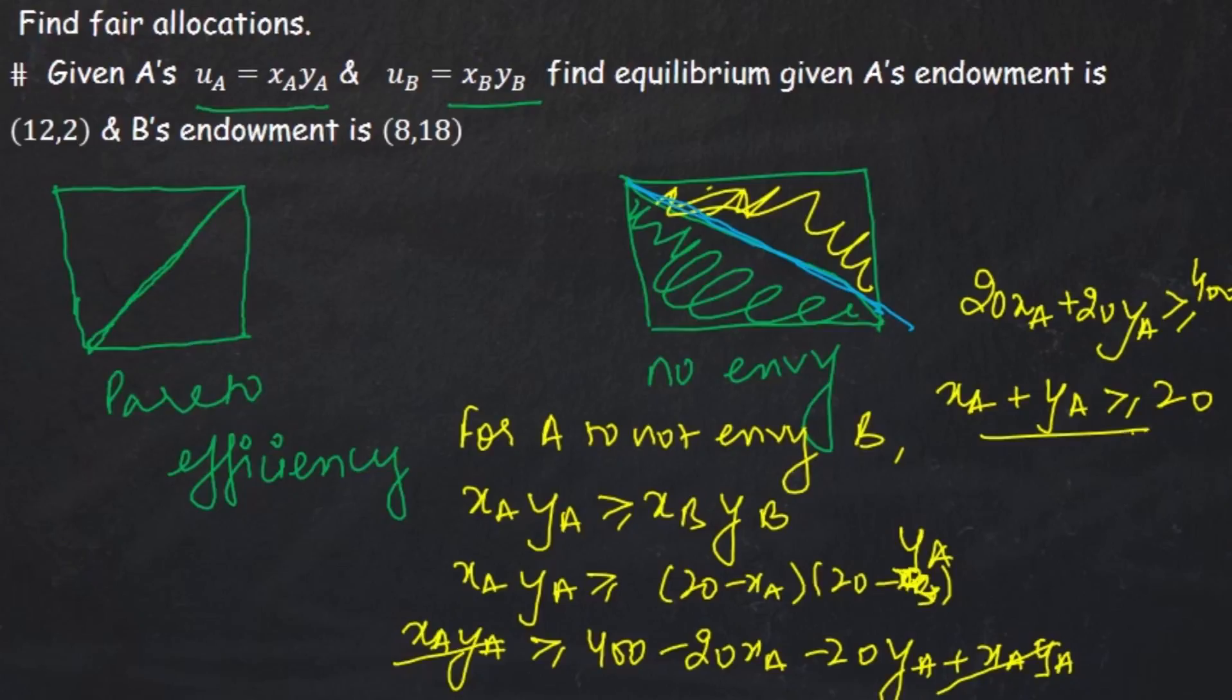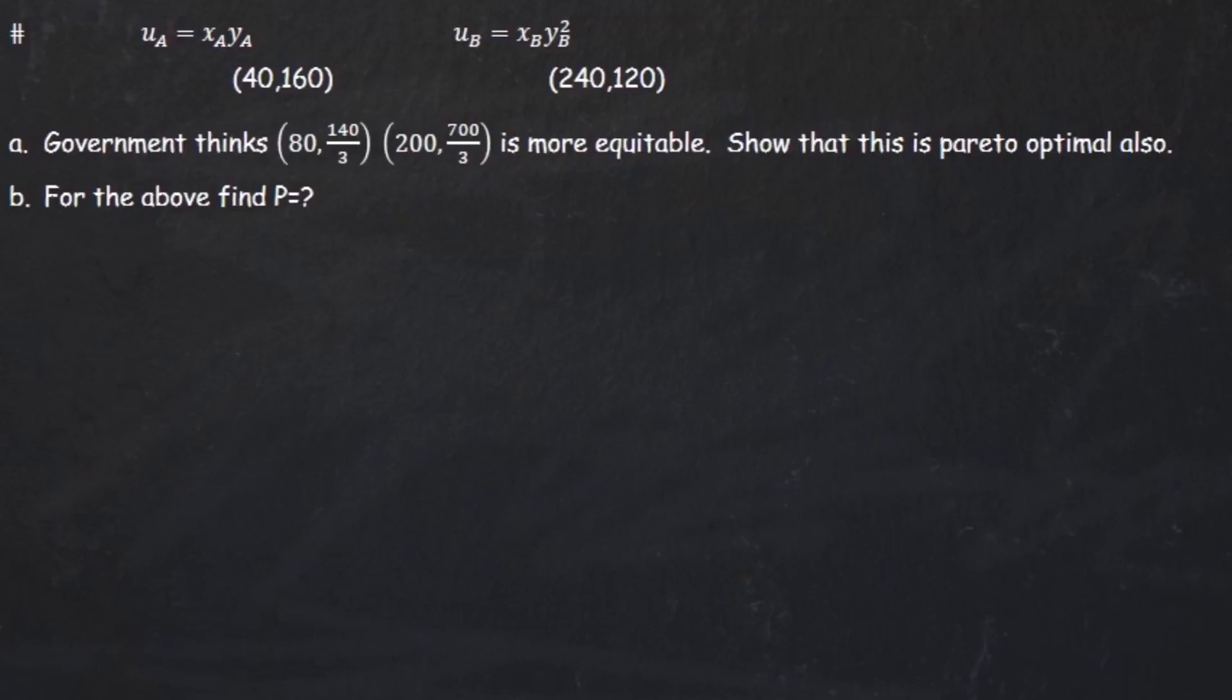So this is the last question. Although this question is not technically a fair allocation question, I wanted to do this to make sure that you are free to do your assignments. We are given uA as a Cobb-Douglas, uB as a Cobb-Douglas with their individual endowments. It says that government thinks that this bundle is more equitable. Whether it is or isn't, we don't care. Government thinks it is more equitable. We have to show that this is Pareto optimal. We know that in two Cobb-Douglas functions, Pareto optimality and Pareto efficiency exist as tangency. So we have to prove that it is the point of tangency or not. We have to figure out the MRS of A. MRS of A is yA upon xA, which is nothing but 140 upon 3 times 80, which is 140 upon 240, which is 7 upon 12.